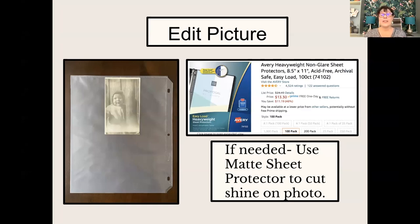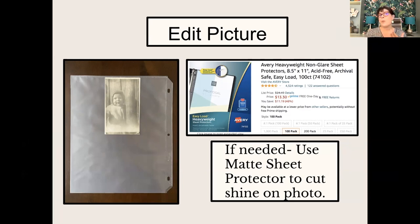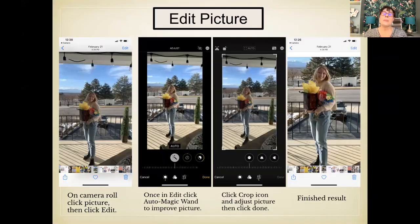Next, we're going to edit the picture. You can see I put a matte sheet protector to cut shine on the photo. Sometimes when you're taking a picture and you turn the lights on to get a great shot, keeping the lights off actually makes a better picture. With my phone, I can then brighten the picture afterward. You're going to have to play around with what works for you — what cuts down the glare. Sometimes just turning all the lights out and taking what looks like a darker picture actually turns out really well.